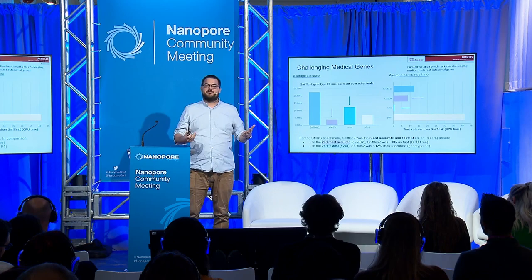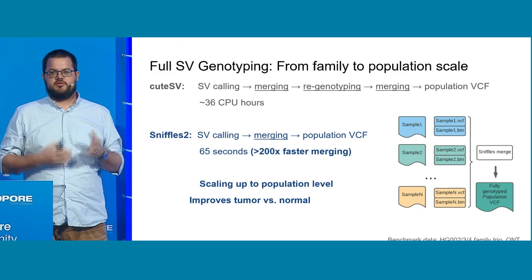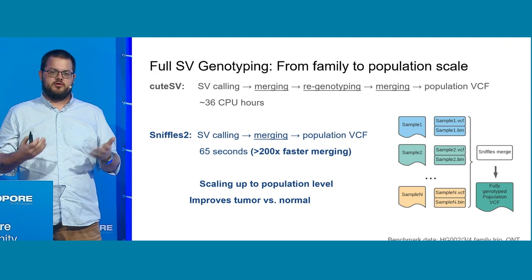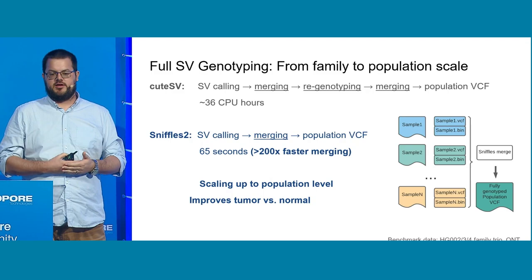So we wanted to push the field forward a little bit more. One of the things I wanted to highlight today is this population merging approach. Lots of people are still focusing on one single sample at a time, but the trend clearly goes towards trios and population sequencing, as there are multiple projects right now. The outcome is really important — to get a fully genotyped VCF file across the entire dataset.